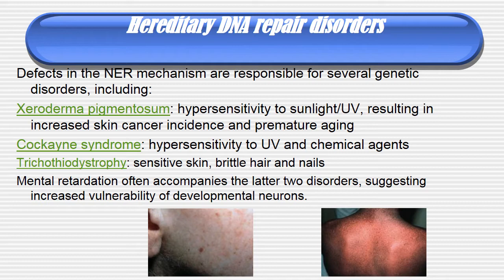Several genetic disorders arise from DNA damage: xeroderma pigmentosum, Cockayne syndrome, and trichothiodystrophy. Xeroderma pigmentosum is a hypersensitivity to sunlight or UV resulting in increased skin cancer incidence and premature aging. Cockayne syndrome is due to hypersensitivity to UV and chemical agents. Trichothiodystrophy causes sensitivity to skin, brittle hair and nails. Mental retardation often accompanies the latter two disorders, suggesting increased vulnerability of developmental neurons.